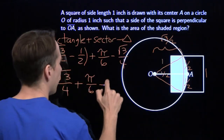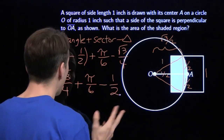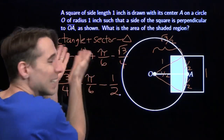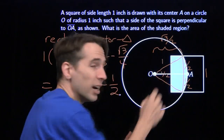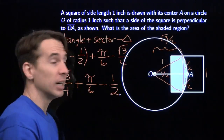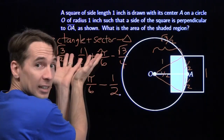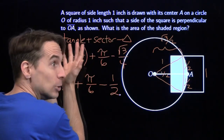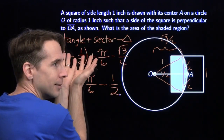Now we do a little simplification. We have √3/2 minus √3/4, which leaves √3/4, plus π/6, minus 1/2. And we have our answer. The key step in all these weird area problems is to express that weird area in terms of pieces you understand. Yes, Harvey, I don't understand very much — but I do understand this.